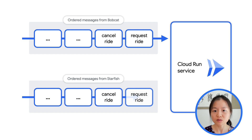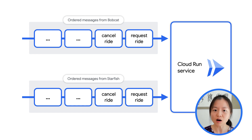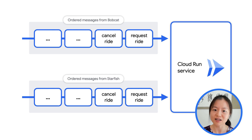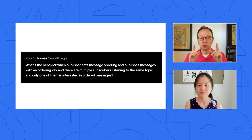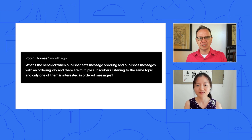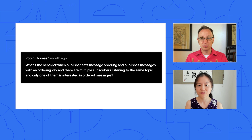For instance, this won't affect request and cancel-ride messages from Starfish. To avoid blocking subsequent messages from individual riders, your code should always acknowledge messages. If the message is badly formatted or if your code throws an exception, catch that exception, acknowledge the message, and report the error to the operator. Don't fail to acknowledge and hold up the message for an extended period of time. So the second question is from Robin Thomas in a comment for our previous video.